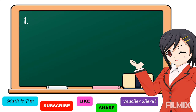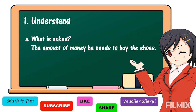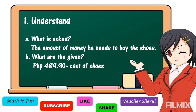To answer our problem, first we're going to understand it. We should know what is asked — it is asking for the amount of money he needs to buy the shoes. The given facts are: 489 pesos and 90 centavos, which is the cost of the shoes, and 345 pesos and 45 centavos, which is the amount Alvin has saved.